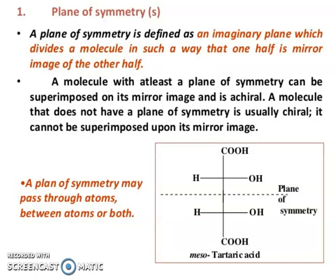Now I will discuss about plane of symmetry, generally represented by sigma. A plane of symmetry is defined as an imaginary plane which divides a molecule in such a way that one half is the mirror image of the other half. A molecule with at least a plane of symmetry can be superimposed on its mirror image and is achiral. A molecule that doesn't have a plane of symmetry is usually chiral — it cannot be superimposed upon its mirror image.